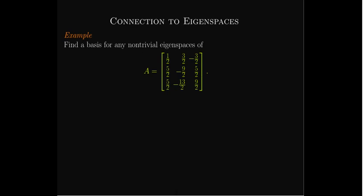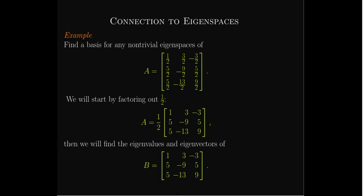Let's see if we can see how that is connected to eigenspaces with an example. This example has fractions in it, but it turns out that we shouldn't be afraid of fractions, particularly in this case because they all have a common denominator. We're going to start by factoring out the one-half, and then the matrix that's left over with integer entries, we're going to call that matrix B.